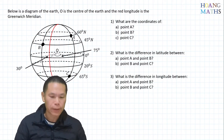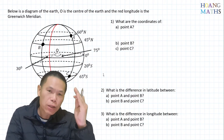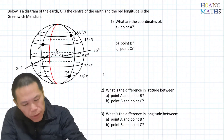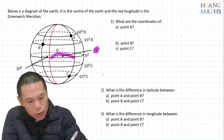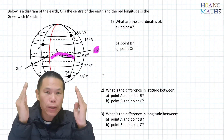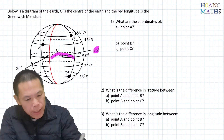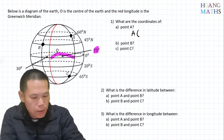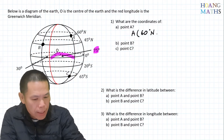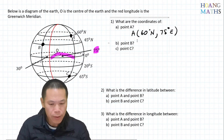Let's go through the practice question. For point I, we always write latitude first. The angle between the Greenwich meridian and this longitude is 75 degrees east. So point I is 60 degrees north of the equator, and the longitude is 75 degrees east of the Greenwich meridian.